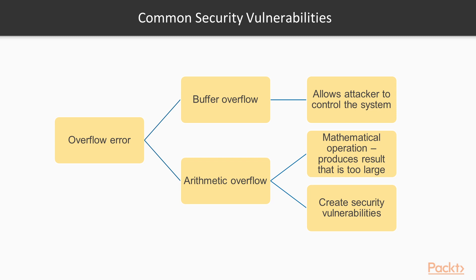Let's look at some common security vulnerabilities. First is overflow error, which includes buffer overflow and integer or arithmetic overflow. Buffer overflows allow attackers to take control over systems by gaining access to the application stack or heap memory through carefully crafted attack data. Integer or arithmetic overflow occurs when a mathematical operation on integers produces a result too large for the maximum size of the type used to store it.